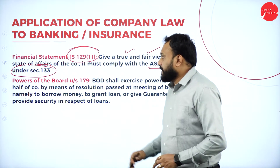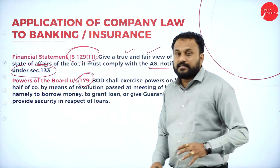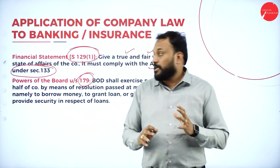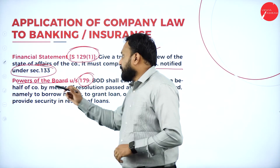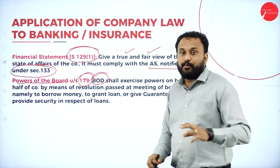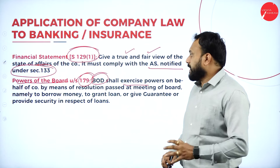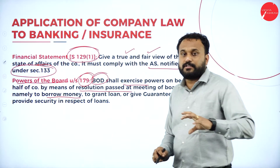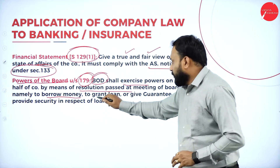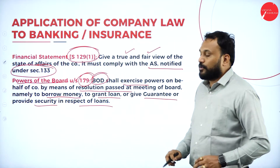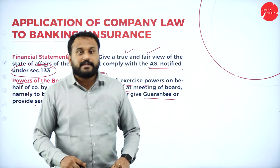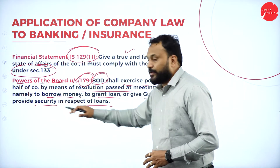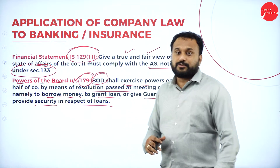Powers of the board are covered under Section 179. If you don't remember the section numbers, it's fine — but do not write a wrong section. You should write the main points instead. The board of directors shall exercise powers on behalf of the company by means of resolutions passed at a board meeting — namely, to borrow money, to grant loans, or to give guarantees or provide security in respect of loans. The board of directors themselves can take this authority.